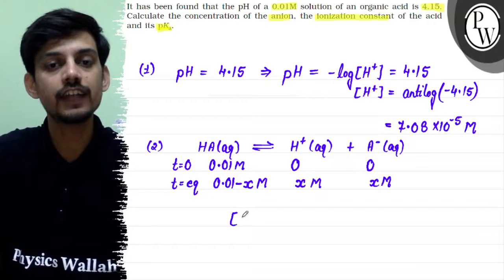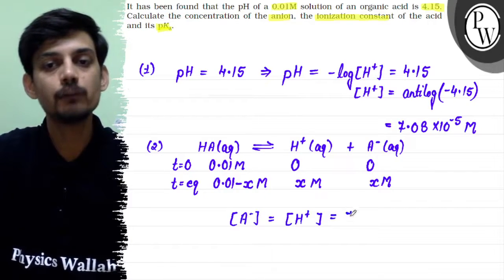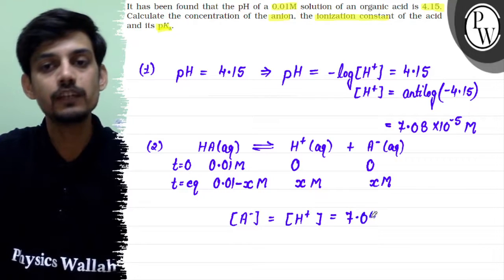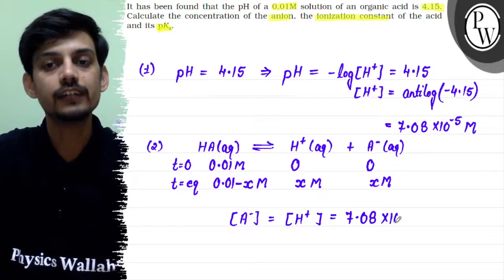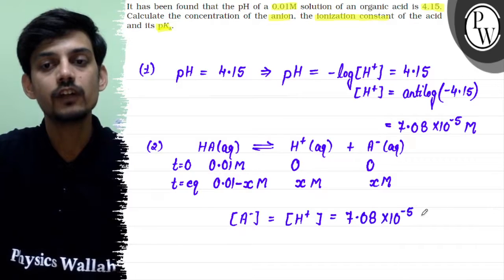The concentration of anion will be equal to the concentration of H plus, and this is equal to 7.08 times 10 to the power minus 5 moles per liter.